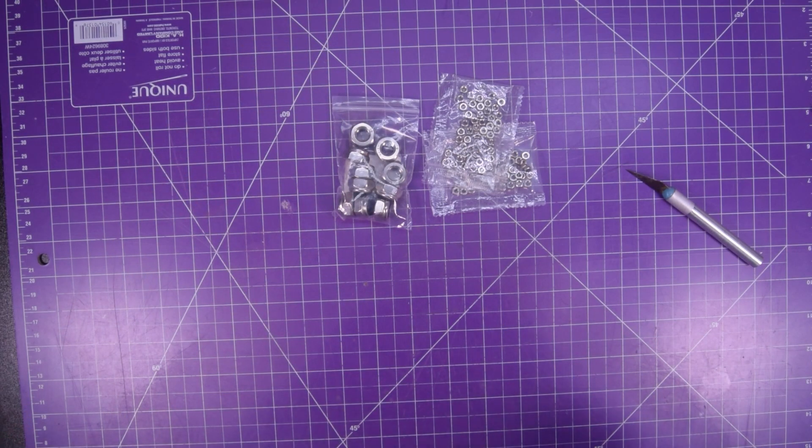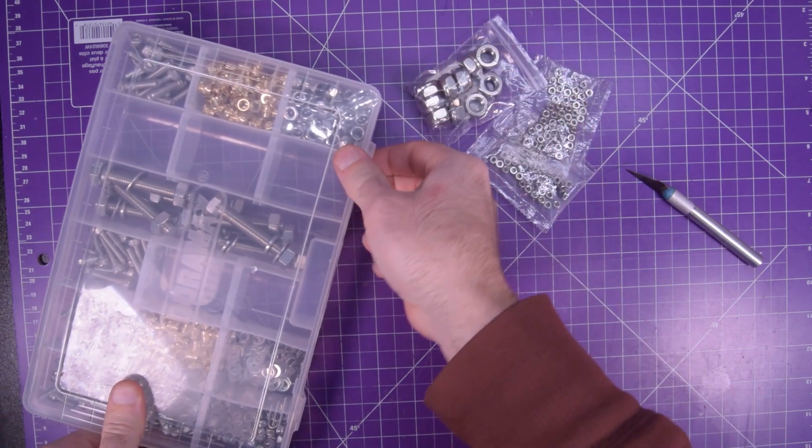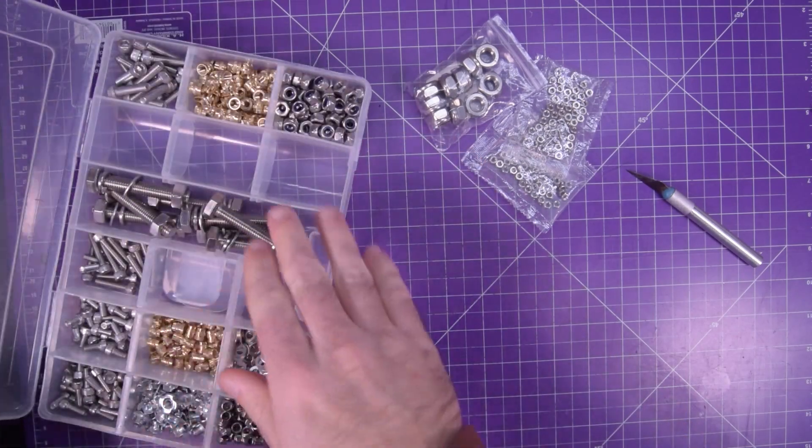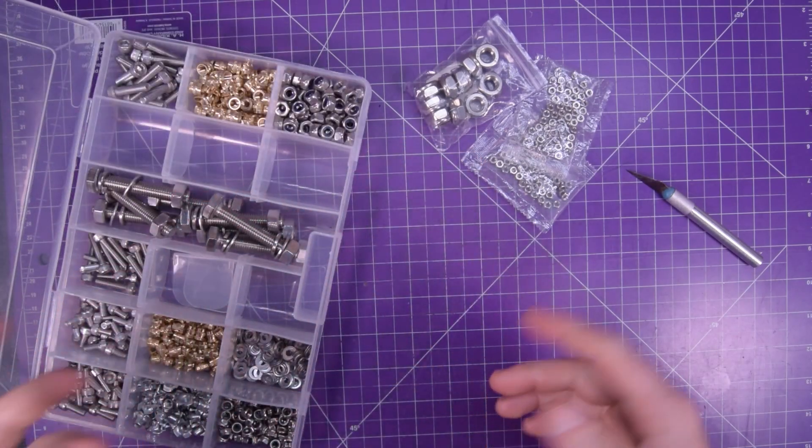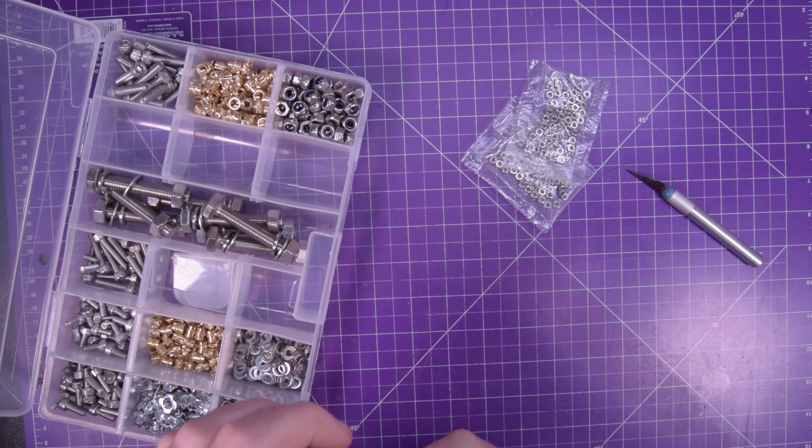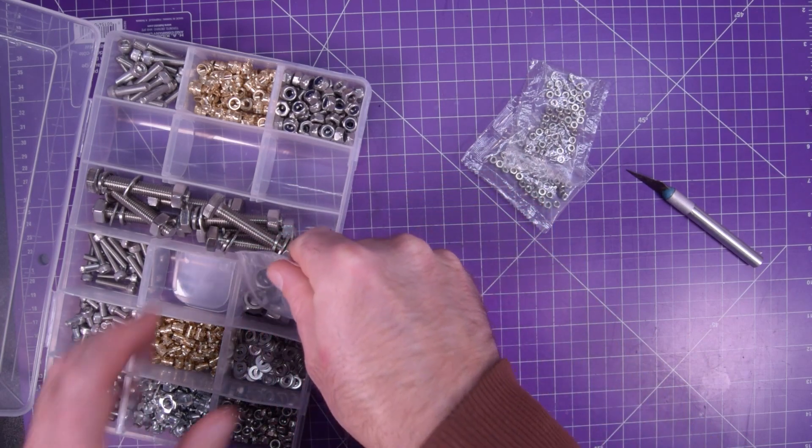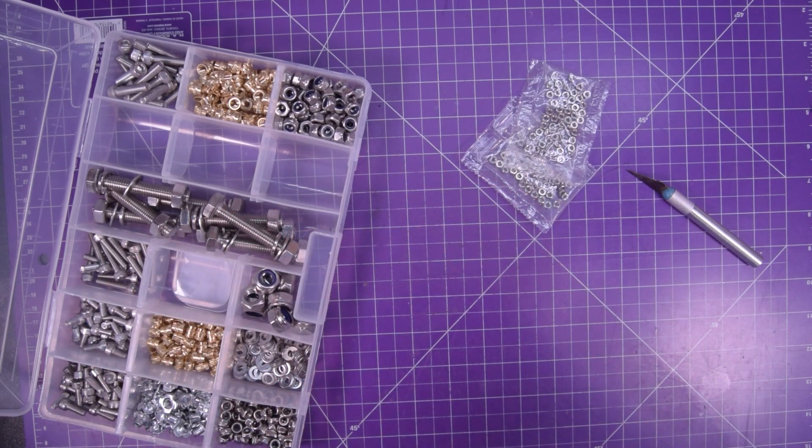So yeah, get this stuff relatively cheap online, because locally metric stuff is ridiculous. So for the M10 stuff, I've got this box here. I just sort of threw them in there because I didn't really know where else to put them. Probably end up having separate containers for these kinds of things. There we go, M10 lock nuts now put away.